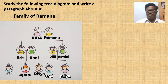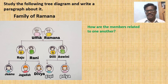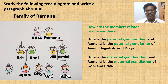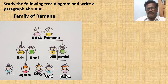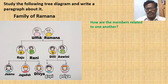Now, relations among the members — how are the members of the family related to one another? Umma is the paternal grandmother and Ramana is the paternal grandfather of Janu, Jagadish, and Divya — here we consider the relations on the father's side. Umma is the maternal grandmother and Ramana is the maternal grandfather of Gopi and Priya — here we consider the relations on the mother's side.